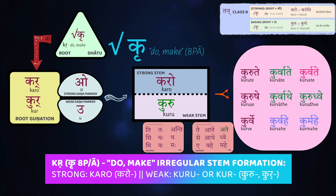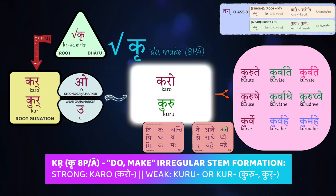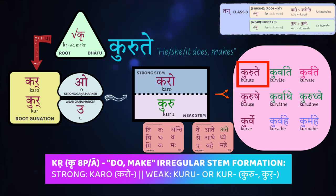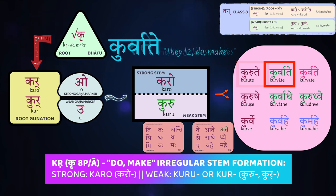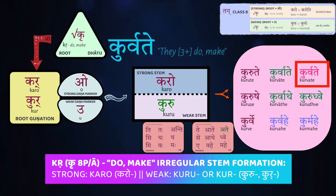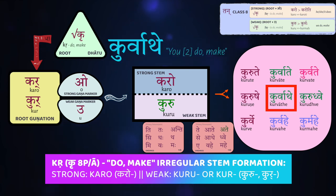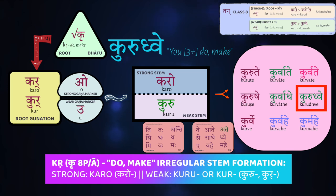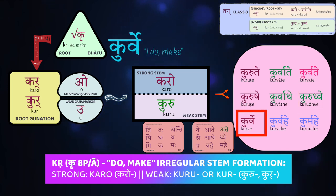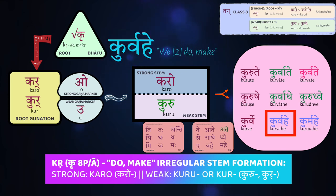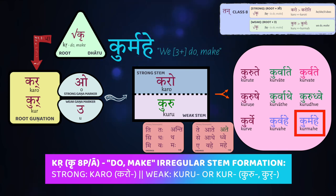Kuru is often also found in the atmanepada, and it's worth a closer look for more atmanepada practice. With all of these non-ganas, the atmanepada takes the weak stem only. So kuru: kurute — she/he/it does. Kurvate — the two of them do or make. Kurvate — they three or more do or make. Second person: kurushe — you do. Kurvate — you two do. And kurudhve — you three or more do or make. In the first person, the uttama purusha: kurve — I do or make. Kurvahe — we two do. And kurmahe — we three or more are doing or making.